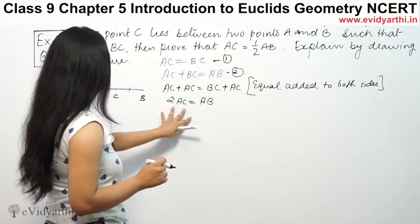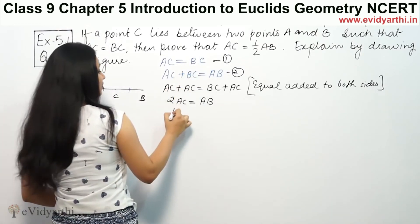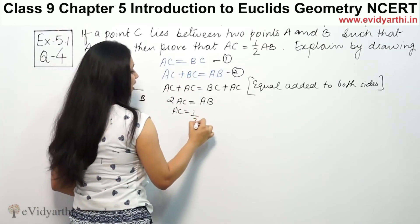We have twice of AC equal to AB. So AC equal to half AB. Therefore, AC will be equal to half AB.